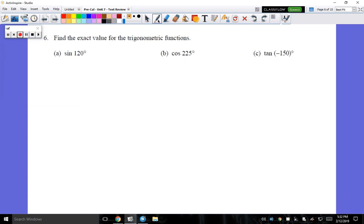Okay, so let's look at number six. It says find the exact value of the trigonometric functions. When you see these two words right here, what we're going to do is create a small little portion of the unit circle.